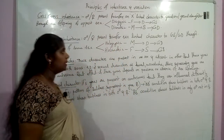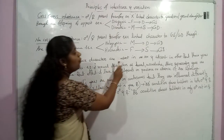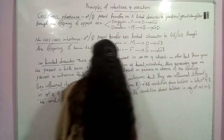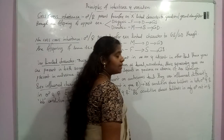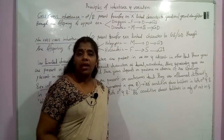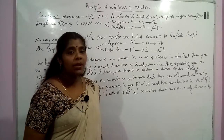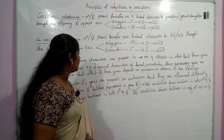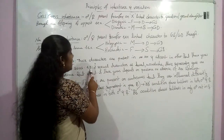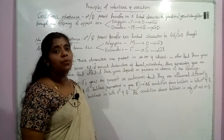Now we will see sex-limited characters. The characters which are present in one sex and absent in the other, but their genes are present in both sexes — that is, the genes exist in both male and female but the character is expressed in only one sex. That is sex-limited character, and it is limited to that particular sex. An example is secondary sexual characters such as beard formation and moustache formation.